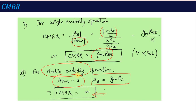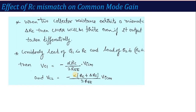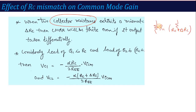In the actual case, when we consider double-ended operation, our ideal CMRR is infinite. But if there is a mismatch between the collector resistances — if one collector resistance is RC and the other is RC plus delta RC — there is a mismatch between these two resistances, and in that case CMRR will have a finite value even when the output is taken differentially.